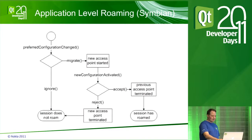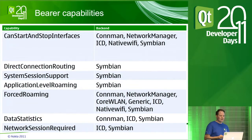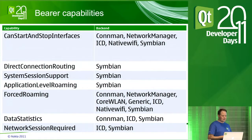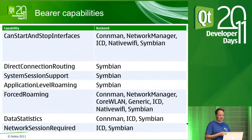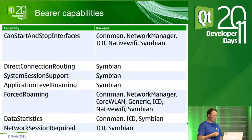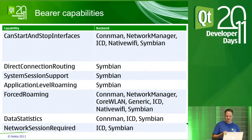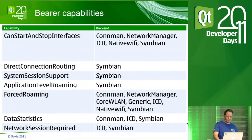Let's check the different capabilities that the Network Configuration Manager has on the various platforms we support. The first capability — can start and stop interfaces — means you can open a closed connection and stop it when you want. The backends that support this are ConnMan on Linux desktops, NetworkManager as well, ICD which is the backend for the N9, native Wi-Fi on Windows, and Symbian.